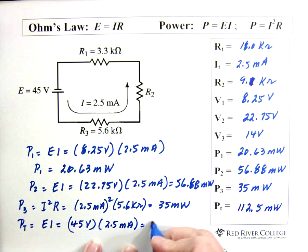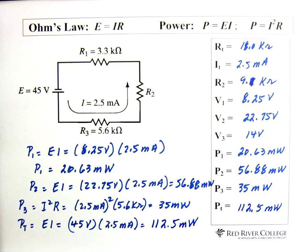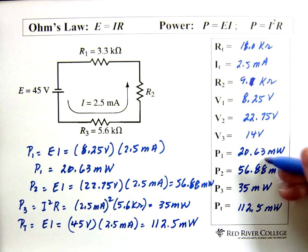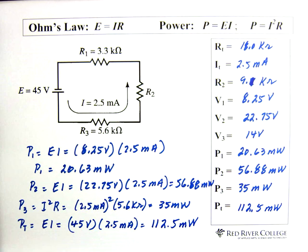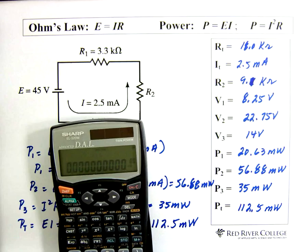And that's what actually goes here. So that's our total power. Now I always check by adding these 3 powers up to make sure that they equal my total power. If they haven't, I've made an error. So 20.63 and I'm just going to add up the numbers because they're all milliwatts.